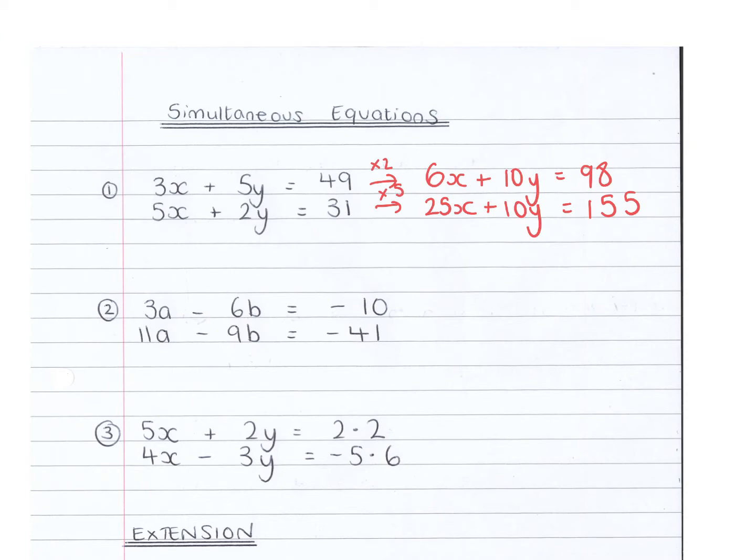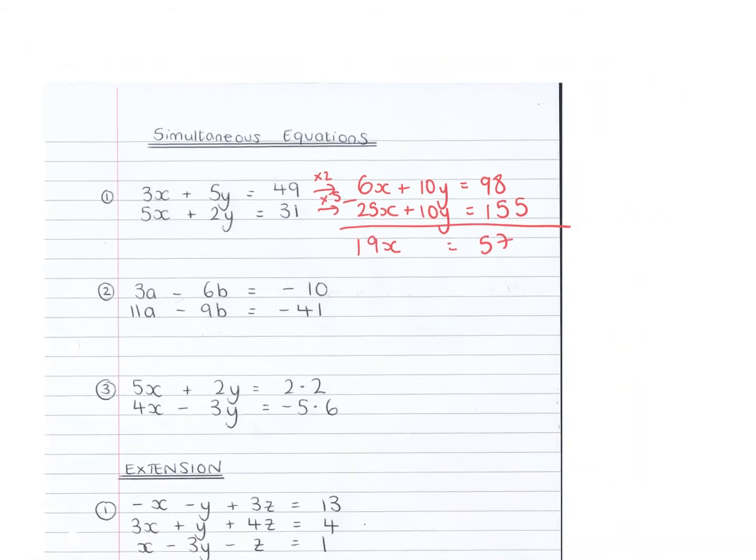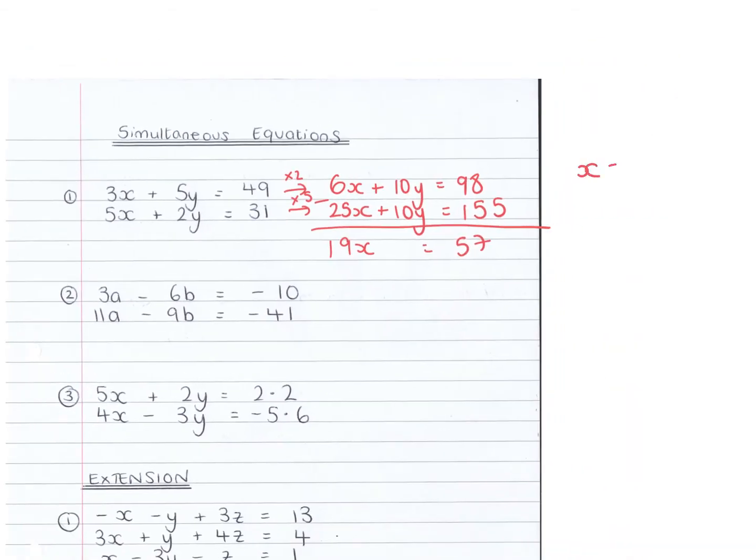So now I'm going to subtract the bottom from the top. 25x take 6x is 19x, and 155 take 98 is 57. So x will be 57 divided by 19, x equals 3.